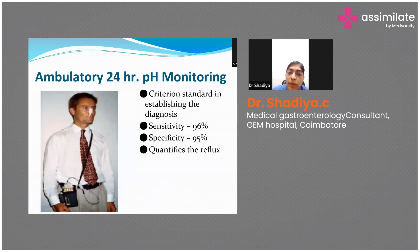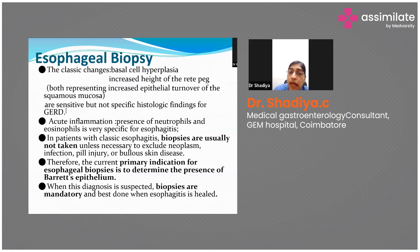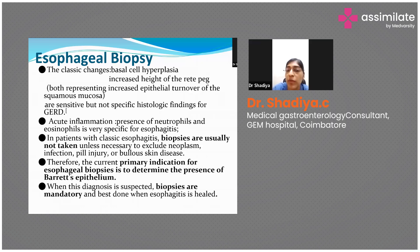Ambulatory 24-hour pH monitoring is the gold standard for diagnosing GERD, with good sensitivity and specificity. Esophageal biopsy shows classic changes of basal cell hyperplasia and increased height of papillary peaks, but these findings are not very specific for GERD, and biopsy is not needed in all patients when the diagnosis is already clear.